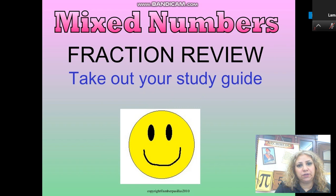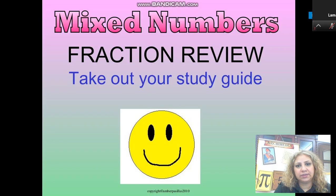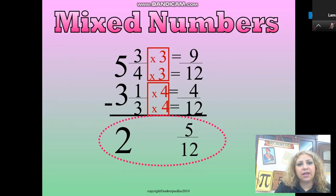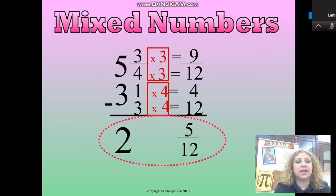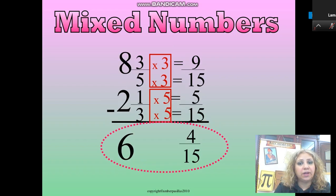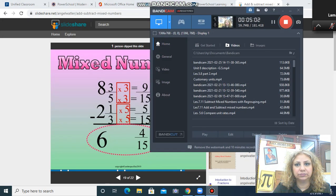Fractions review: take out your study guide, take out a copy book, and start reviewing how to add and subtract mixed numbers. You can pause the video and solve these exercises. To summarize: adding and subtracting mixed numbers is exactly the same as adding and subtracting fractions. Find the LCD first, then write the equivalent fractions using multiplication, and don't forget to simplify if the fraction needs simplification. Thank you!